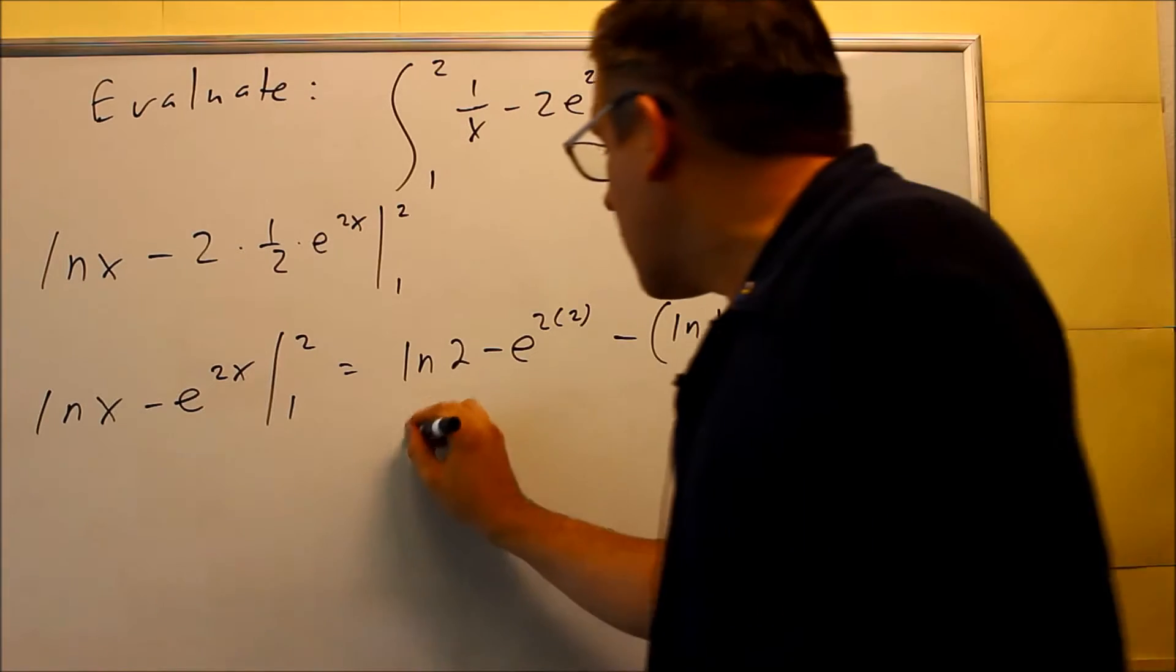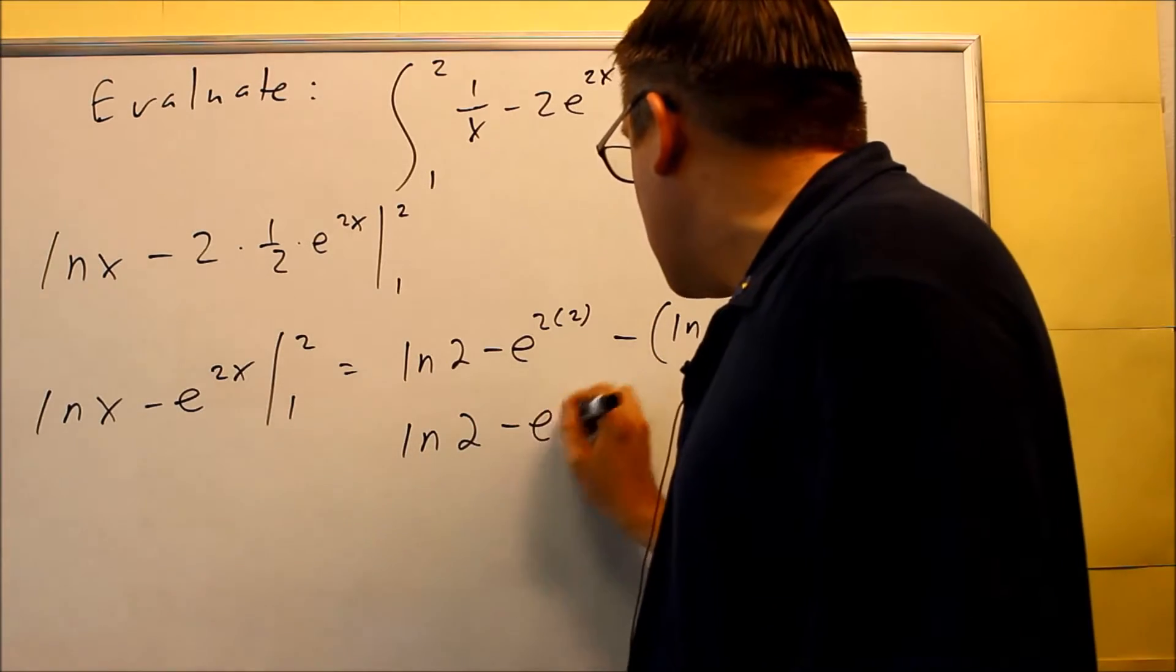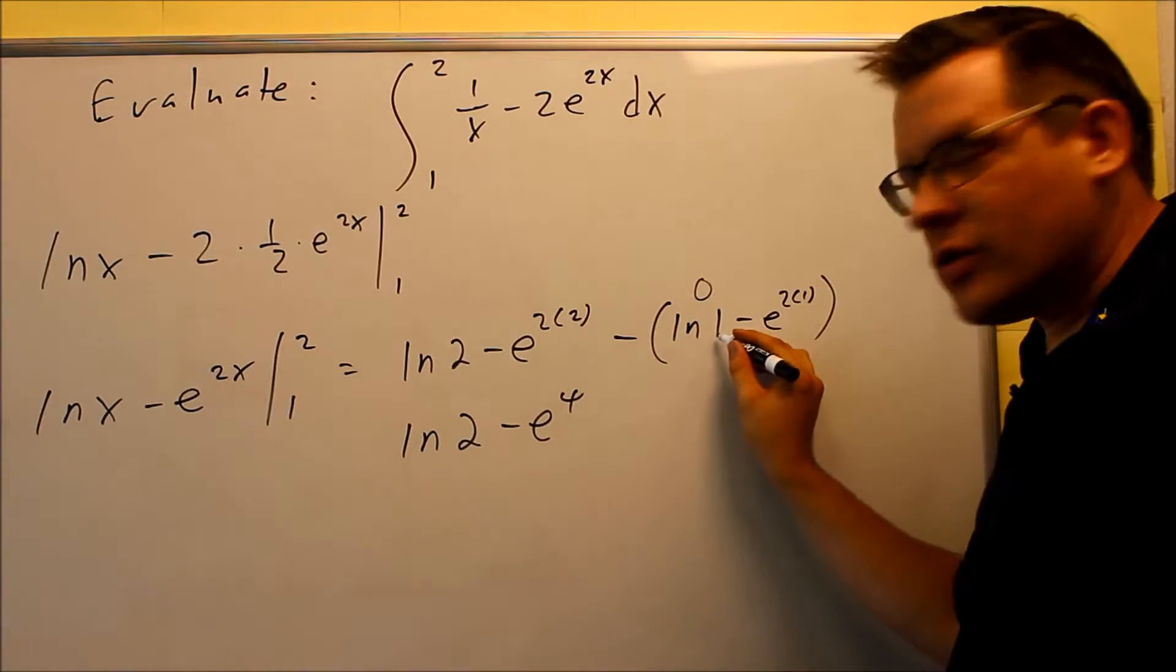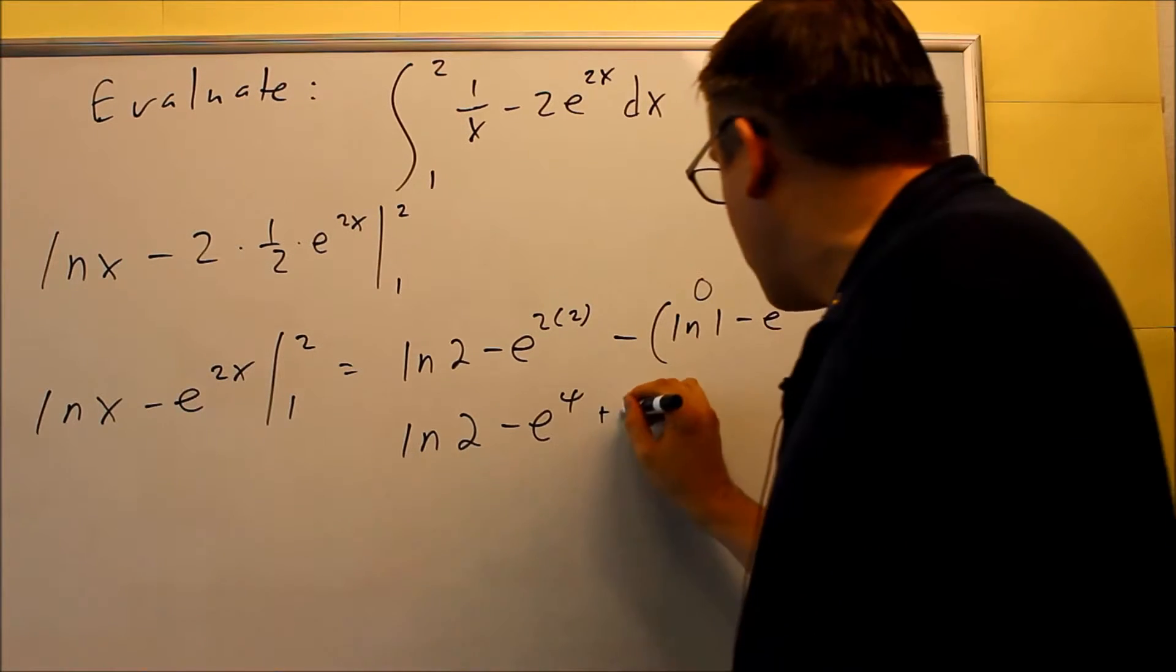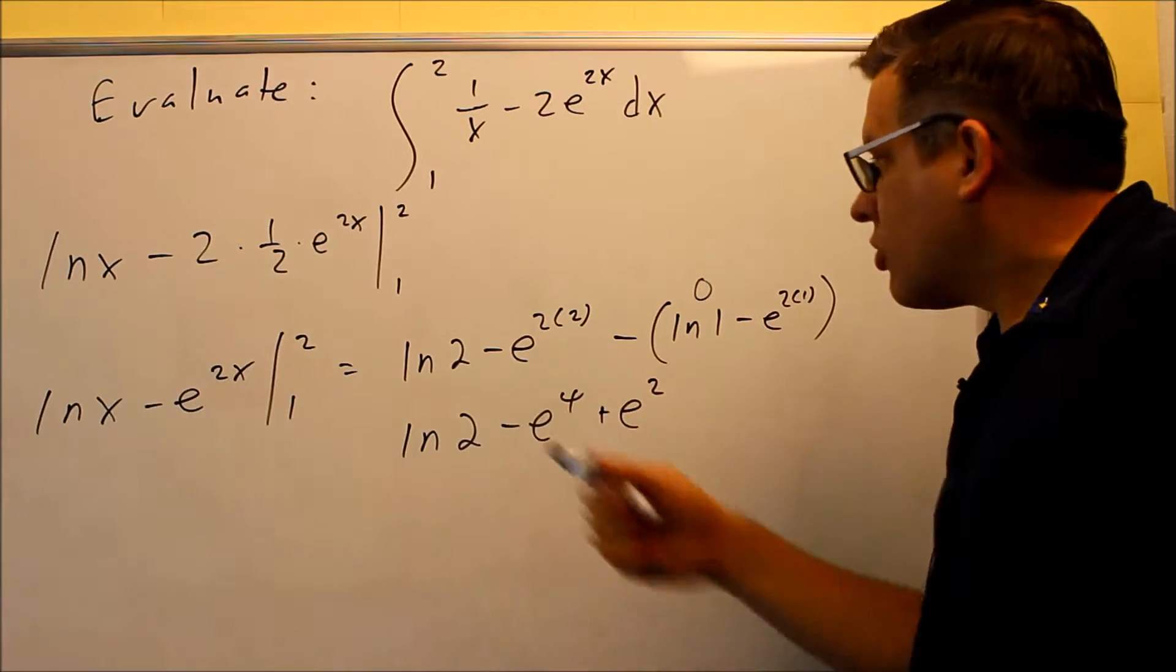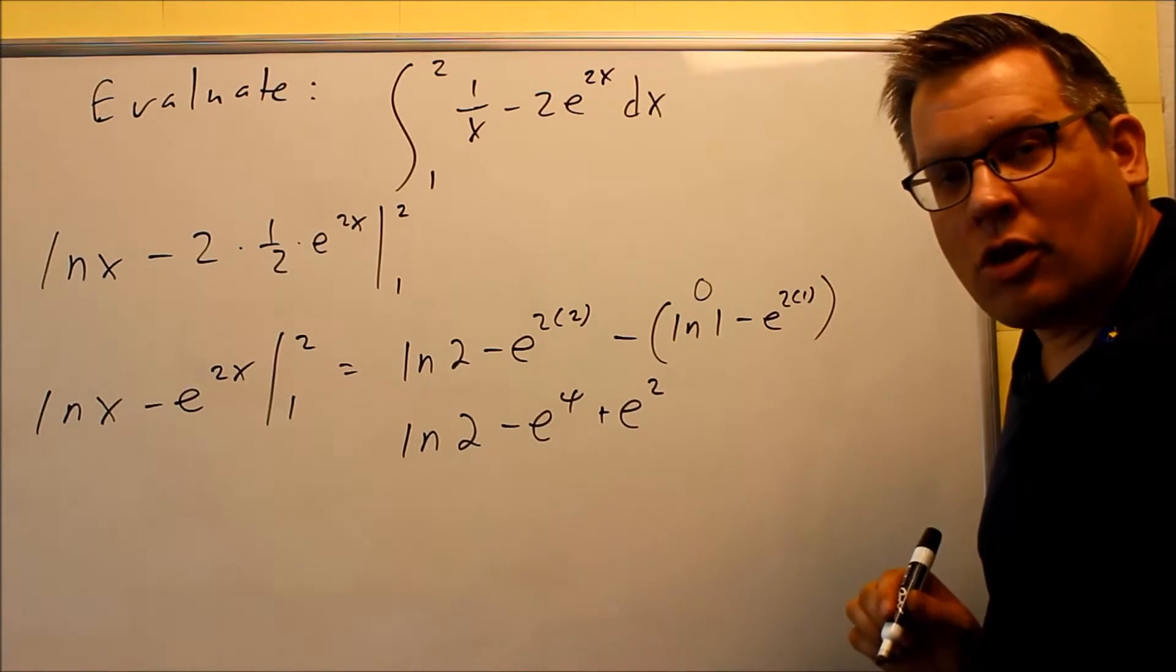Alright, so this is going to give us natural log of 2 minus e to the 4th. And then inside here, natural log of 1 is 0. Minus minus will give you a plus e squared. And then these are not like terms, so that would be as far as you can go with your answer.